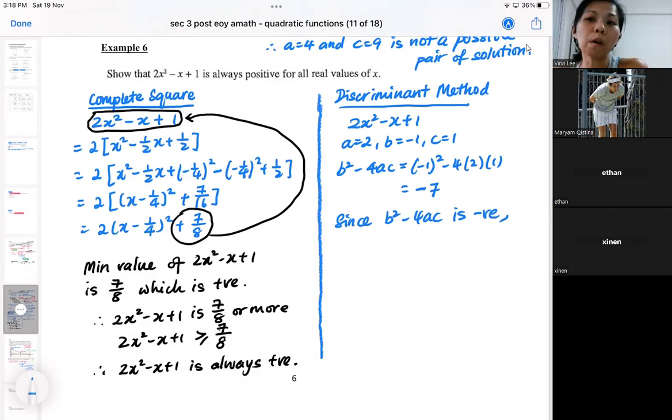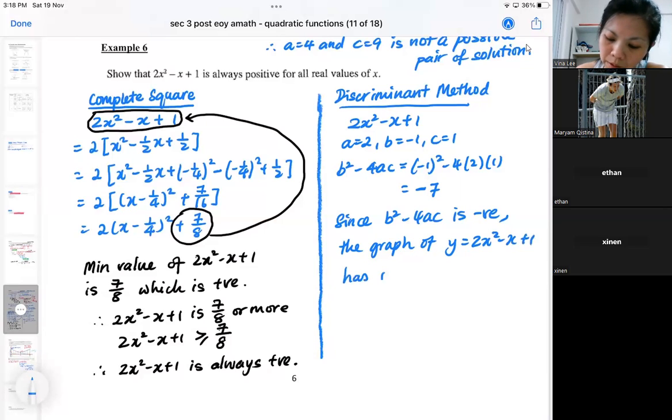If you get a negative discriminant, what does that mean? It means the graph of this has no intersection—it doesn't have any intersections with the x-axis.